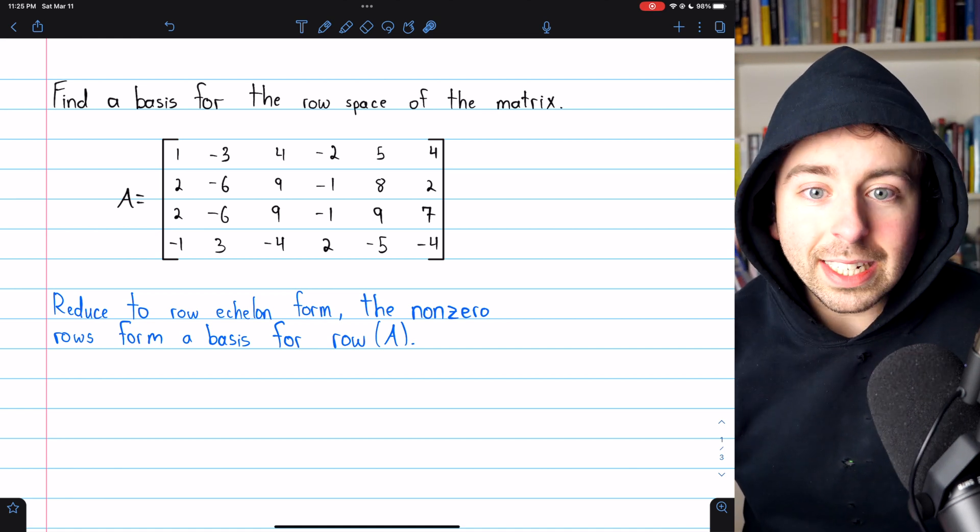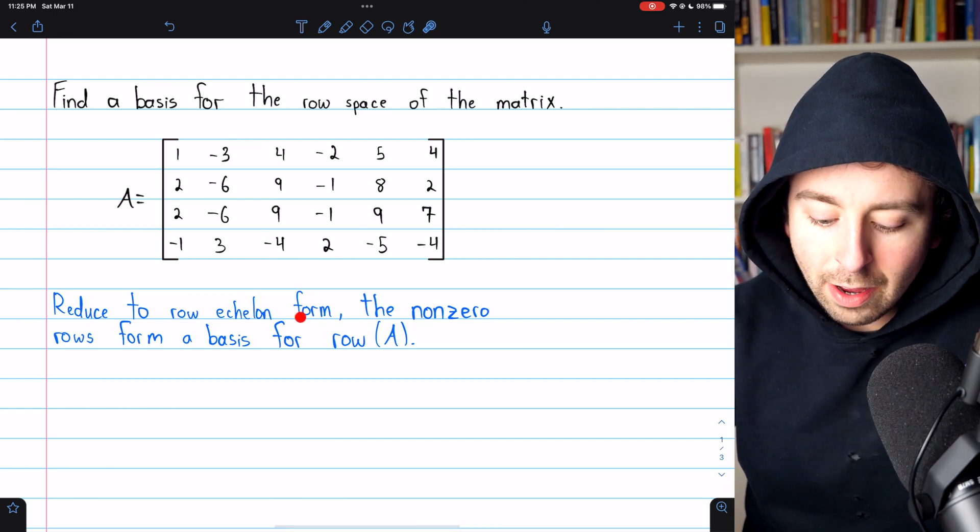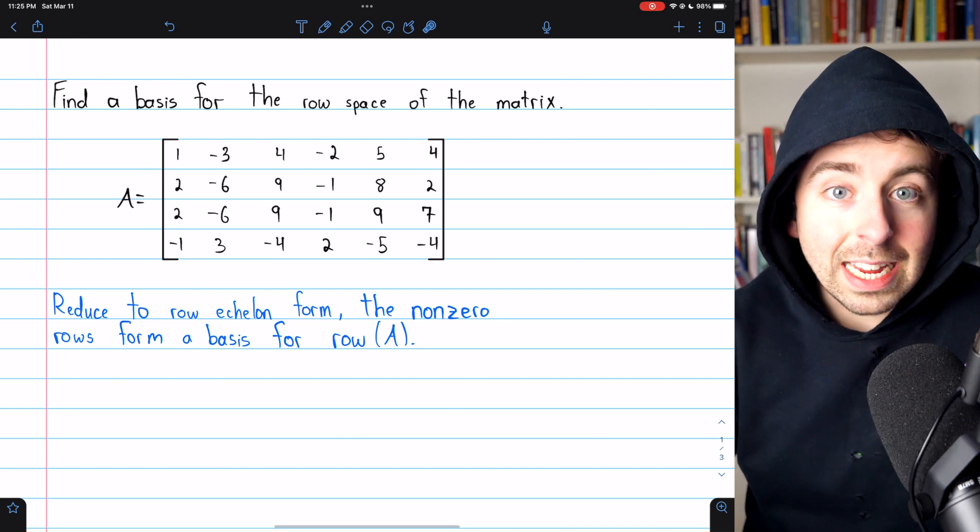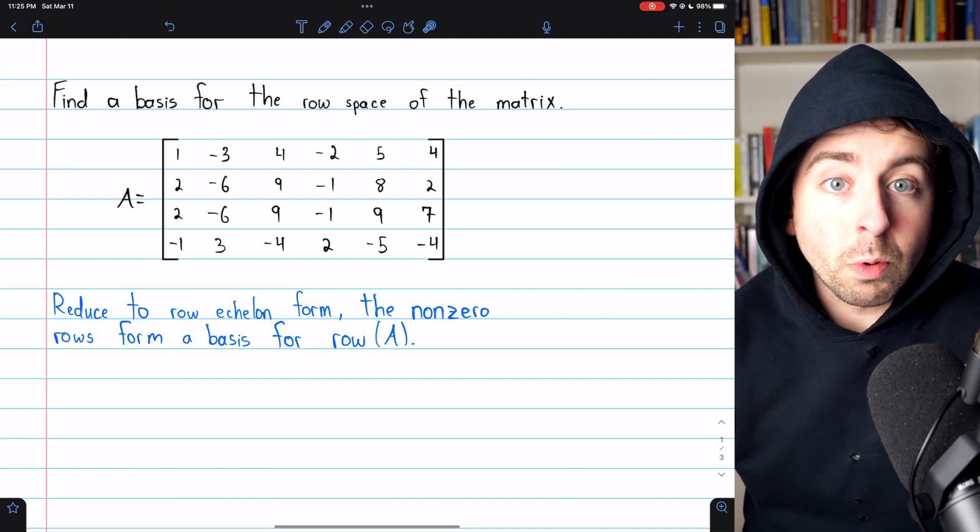This is pretty straightforward. All we need to do is take this matrix A and reduce it to row echelon form. Then the non-zero rows in that echelon form will form a basis for the row space.